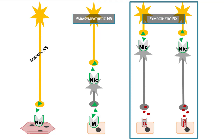For example, norepinephrine binding to an alpha or beta receptor on the heart will make it beat faster and contract more forcefully. On the eye, it will dilate to allow more light in so we can see danger better. In the intestines, it will actually slow down digestion, because we want blood flow to go to the muscles so that you can run away from danger more easily.